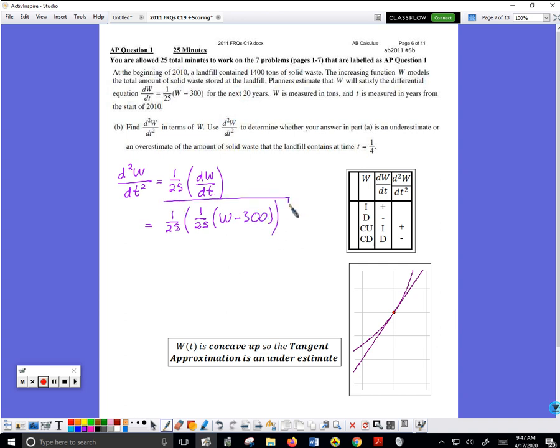Use that second derivative to determine whether your answer of part A is an underestimate or overestimate. Okay, I remember something from the golden notes: when I am using a tangent line to approximate something, what I'm concerned about is whether the curve is concave up or concave down.